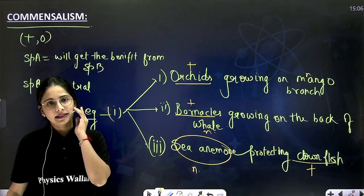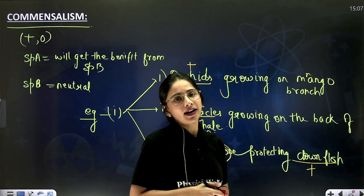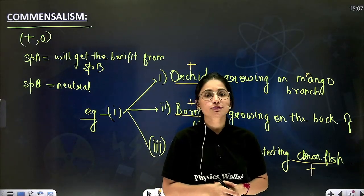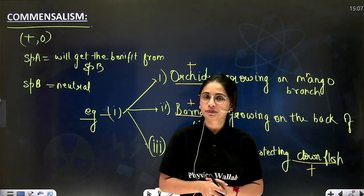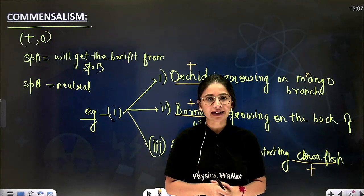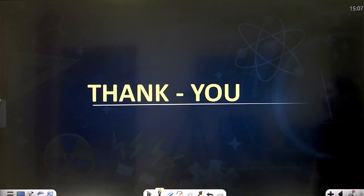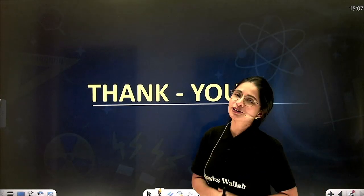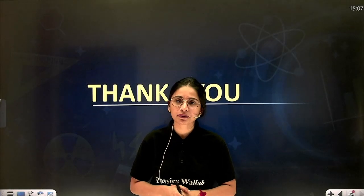So this is commensalism as a type of population interaction. I hope you have understood both the types of growth curves as well as the two types of population interaction covered today. I am going to keep it here for this class; the remaining four or five interactions we will do in the next class. Thank you for joining me — see you in the next lecture with more population interactions, which will be the final lecture on this chapter. Bye everyone, take care.